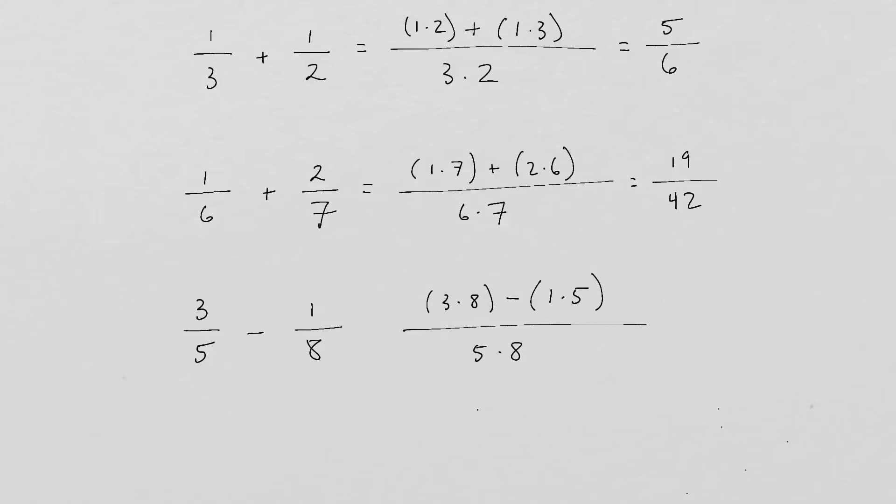So 3 times 8, that's 24. Minus 1 times 5 is 5. So 24 minus 5 gives us 19. And 5 times 8 is 40. Final answer, 19/40.